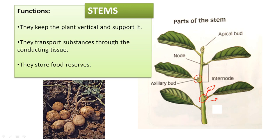The plant grows vertically especially at the apical bud. The apical bud — la yema terminal — has many cells that are multiplying, and this growth makes the stem grow vertically. It's the point at the tip of the plant where the plant grows bigger vertically. That's all for the stems.